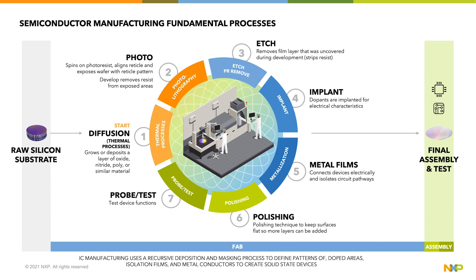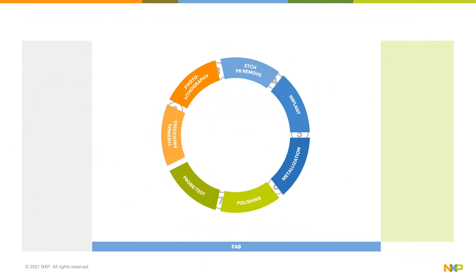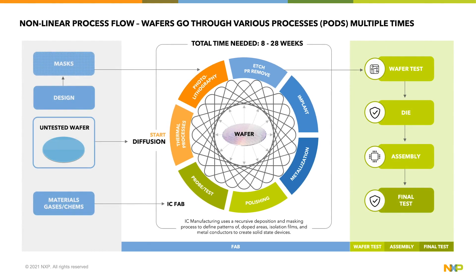Once the fab processing is complete, we have a wafer with many die on it, which can then be passed on to the back-end processing steps. One key concept to understand is that semiconductors do not go through a linear processing flow in the fab. They will spend their time rotating through a series of very expensive tools as these layers are built up on top of each other. This layering can happen more than 50 times on some of the more complex semiconductor products, and each layer requires many steps to create that specific layer. This speaks to why the processing cycle times are so long in the fab.